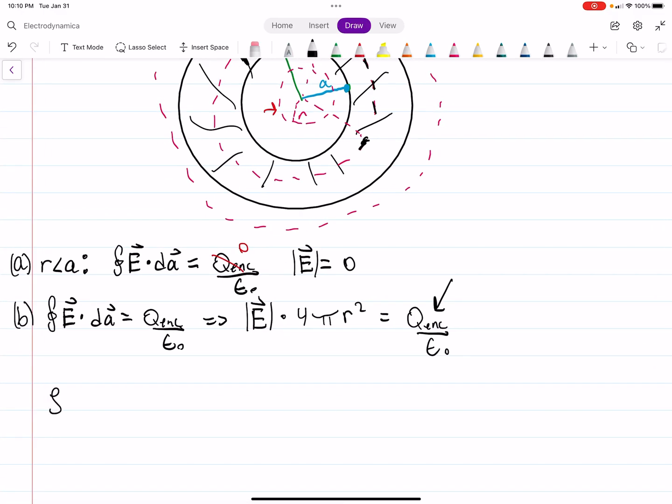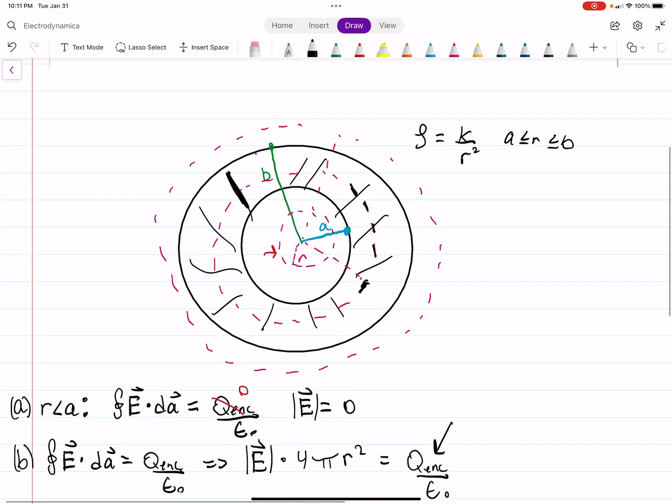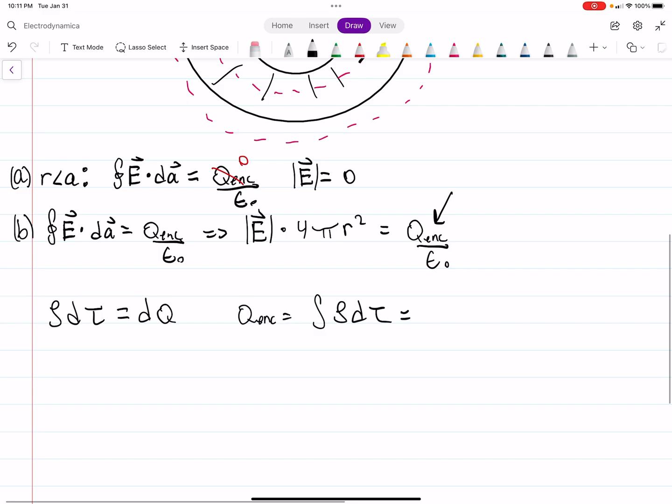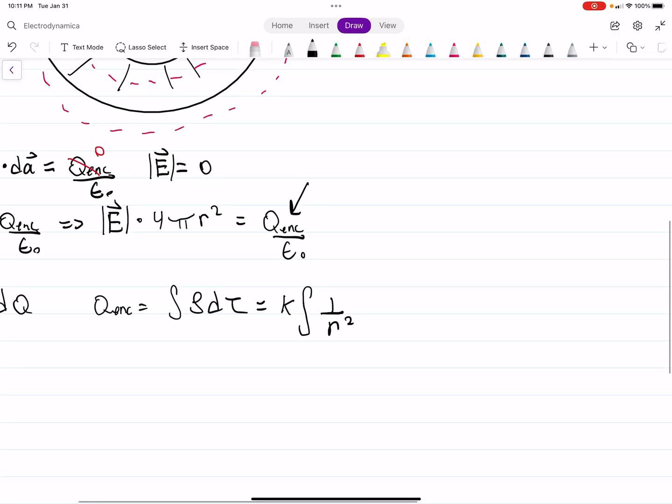So our last bit of business here is to find what Q enclosed is. So, if rho is the charge per volume, rho times dV, but I think they usually call it d tau, which is the volume element, is equal to dQ. So the enclosed charge, our enclosed charge, then, is the integral of rho d tau. And we know rho is given as just K divided by R squared. So I'm going to factor out the K. We have the integral 1 over R squared. And then, this is spherical coordinates, so our d tau is R squared, sine theta, dr, d theta, d phi.